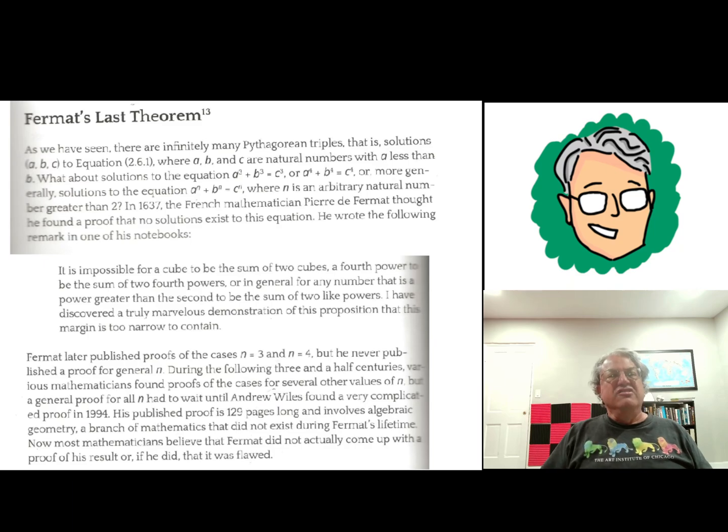It was a 129-page proof that involved some cutting-edge math that wasn't even invented until the 20th century, until 300 years after Fermat. And so far, nobody's found any flaws in his proof. It's a very difficult proof to go through. I've never gone through it. I don't think I could. But a handful of mathematicians have, and all the mathematicians who have studied Andrew Wiles' proof are convinced that it holds water, that it is an actual proof of Fermat's last theorem. But it took over 350 years to prove.